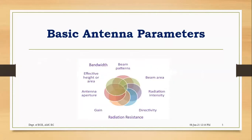Now we'll move on to the basic antenna parameters. The complete module is on these nine parameters which we will be studying in detail. The nine parameters are: beam pattern or radiation pattern, beam area or beam solid angle, beam efficiency, radiation intensity, radiation resistance, directivity and gain, antenna aperture, effective height or area, and bandwidth. Each parameter has different properties with respect to the antenna.